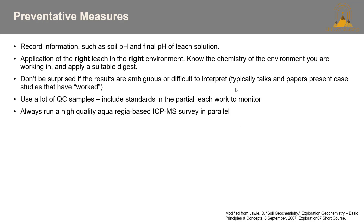Some preventative measures: record as much information as possible — soil pH, final pH of the leach solution. Always apply the right leach in the right environment; know your chemistry and apply a suitable digest. Don't be surprised if results are ambiguous or difficult to interpret — case studies in talks and papers tend to be the ones that worked, and people rarely discuss failures. Always use plenty of QC samples, including standards, to monitor partial leach work. If you're doing partial leaches, it's really important to run a high-quality aqua regia-based ICP-MS survey in parallel, or a 4-acid, so you have a near-total or close-to-total digest for comparison.